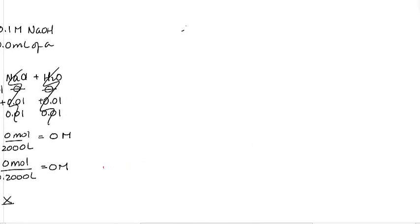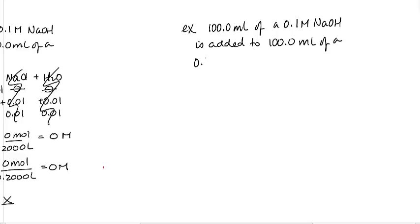So in this example, we're now going to have 100.0 milliliters of a 0.1 molar NaOH is added to 100.0 milliliters of a 0.1 molar CH3COOH. Now, if you take a look at the previous calculation, you will see that the wording that I have used is very similar.